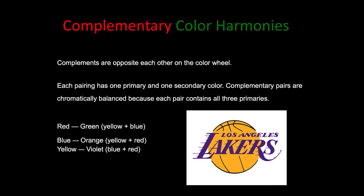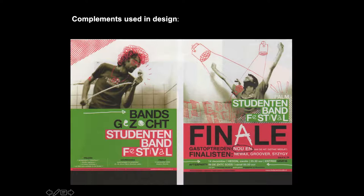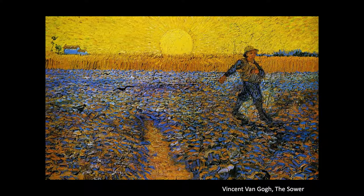Complementary color harmonies are composed of colors that are opposite to each other on the color wheel. In complementary color harmonies, each pairing will always have a primary and a secondary. The complementary pairs are chromatically balanced because each pair contains all three primaries — if one of your primaries is yellow and its opposite is purple, purple is composed of red and blue, giving you that rich feeling that all three primaries have been used. When complementary colors are used in design, they tend to have great impact.